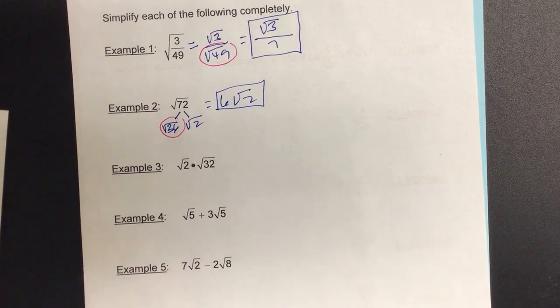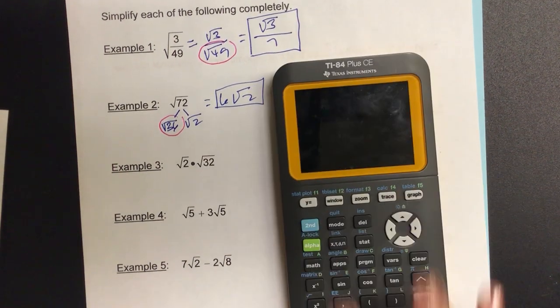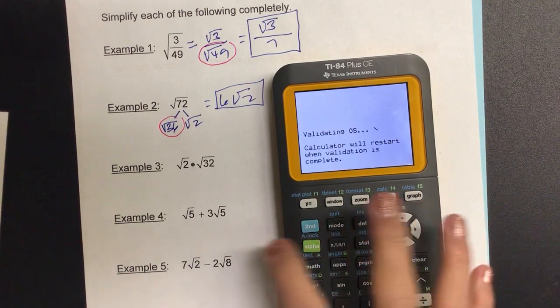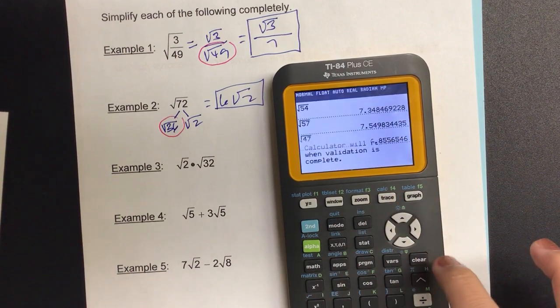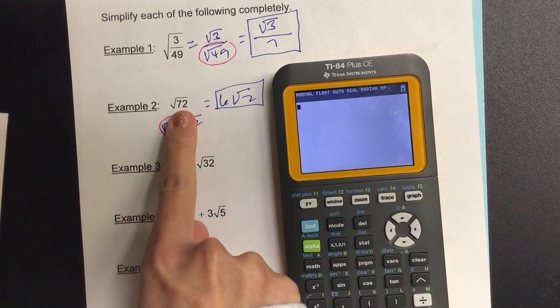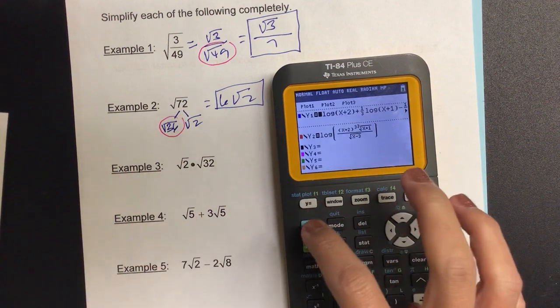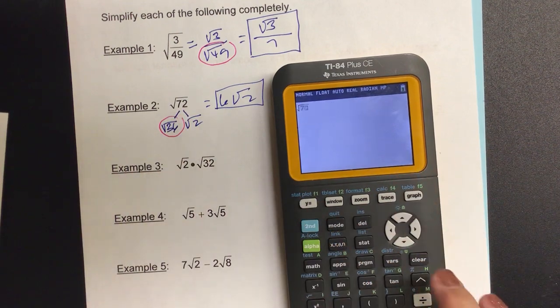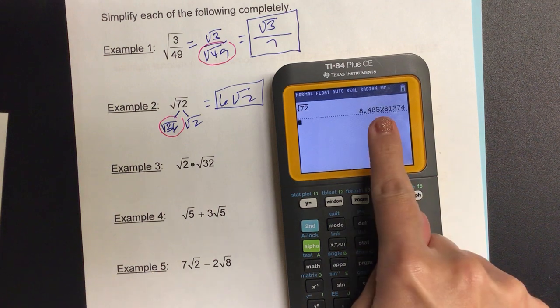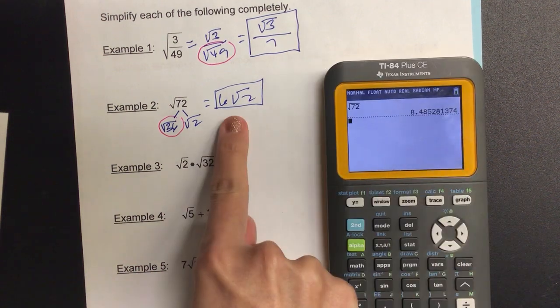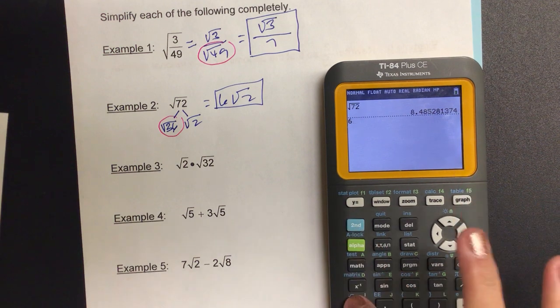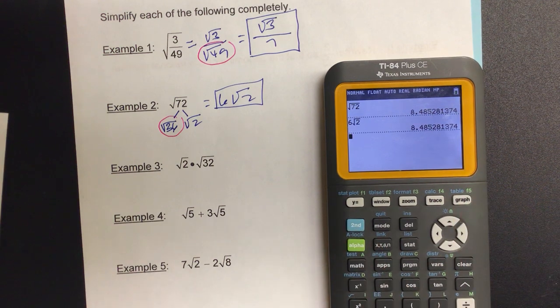And we're good to go. And not that we use a calculator in this class, but if you're ever thinking, hey, do I have the answer correct, there's a way to check. And I'm only gonna show this one time. Let's say I have radical 72, radical 72, and I have this ugly decimal. And I want to make sure that my final answer is identical. So when I type in 6 radical 2, it'll be the same ugly decimal.